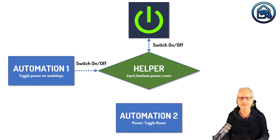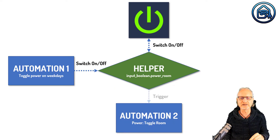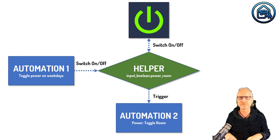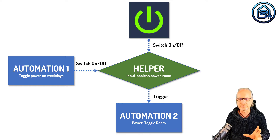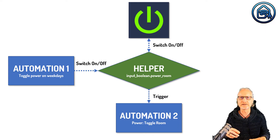Then, based on this helper, another automation is triggered — and that's actually the automation that toggles the room, where all the actions are. So you need two automations and one helper. This is really powerful because you can also make a chain of helpers where each helper triggers another helper. I'm going to show you how that works in another example.